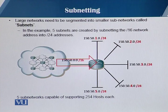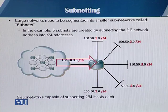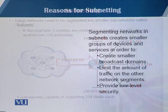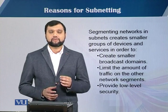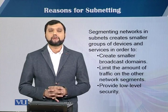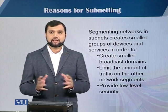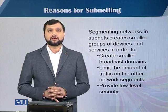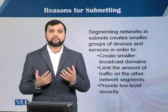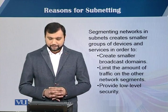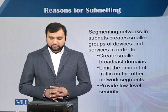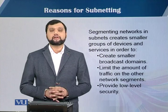The subnet IDs are 150.50.1.0, 150.50.2.0, and so on. First of all, we want to reduce or limit the broadcast domain, so that routers don't have to forward or broadcast the traffic to all networks. Also, we want to limit the traffic on other network segments.